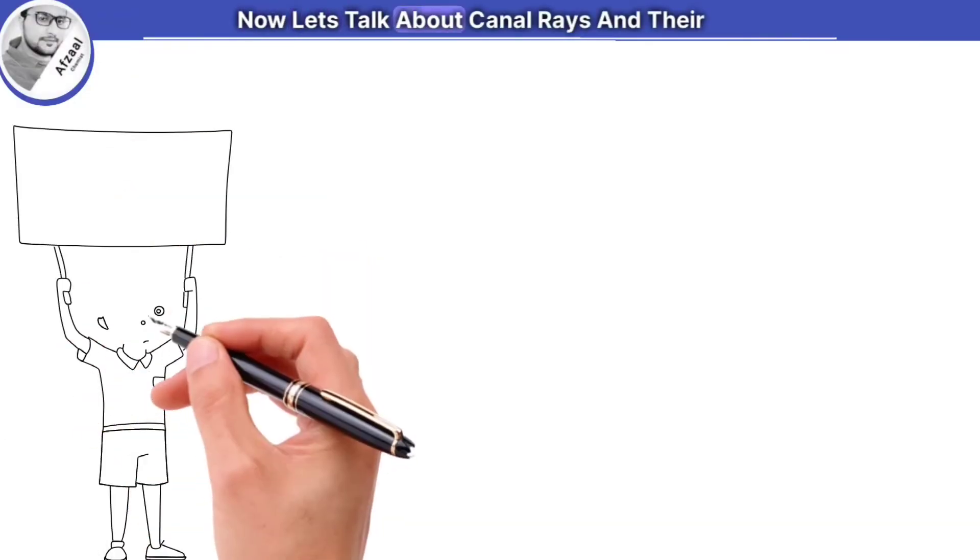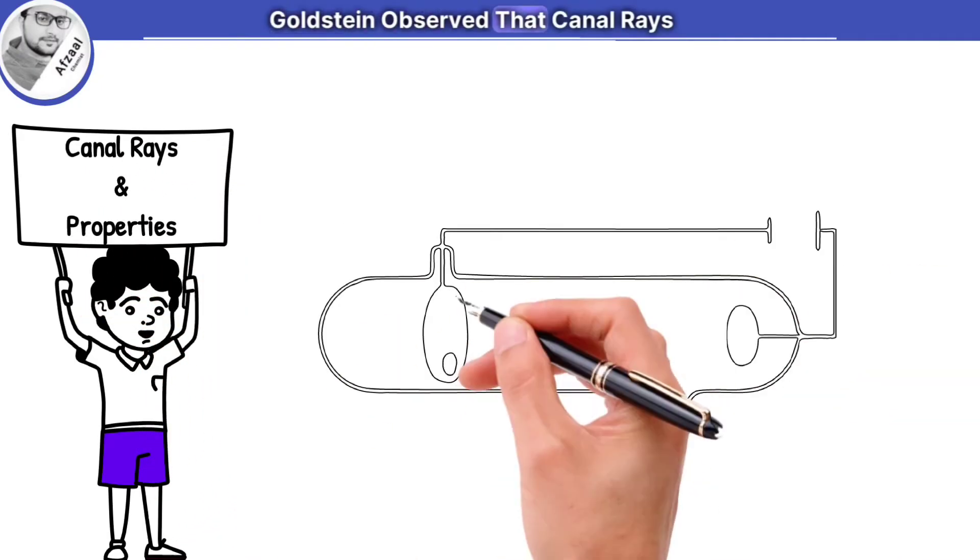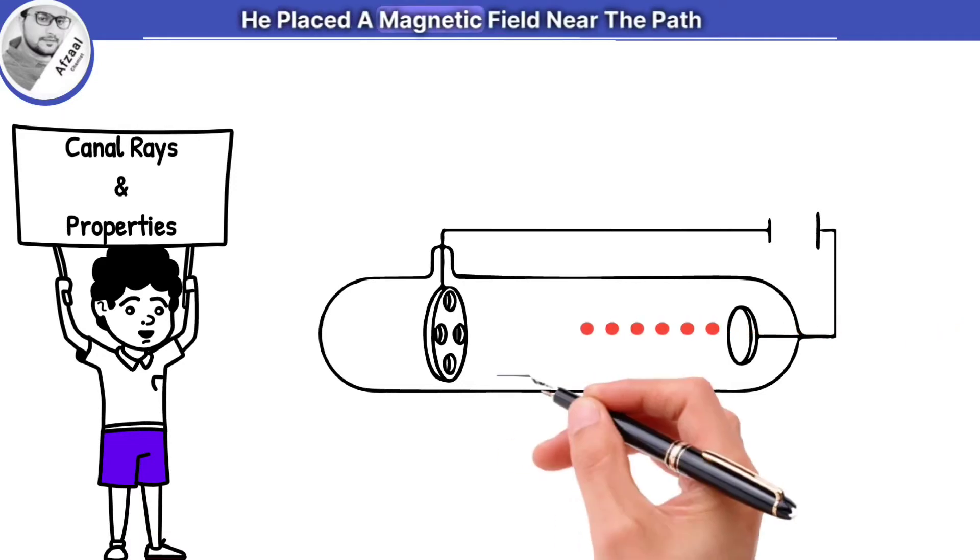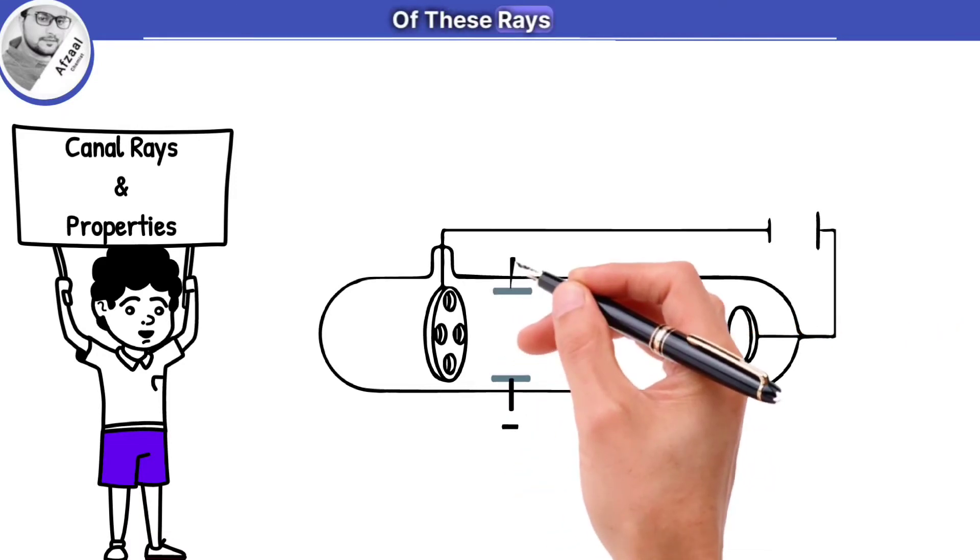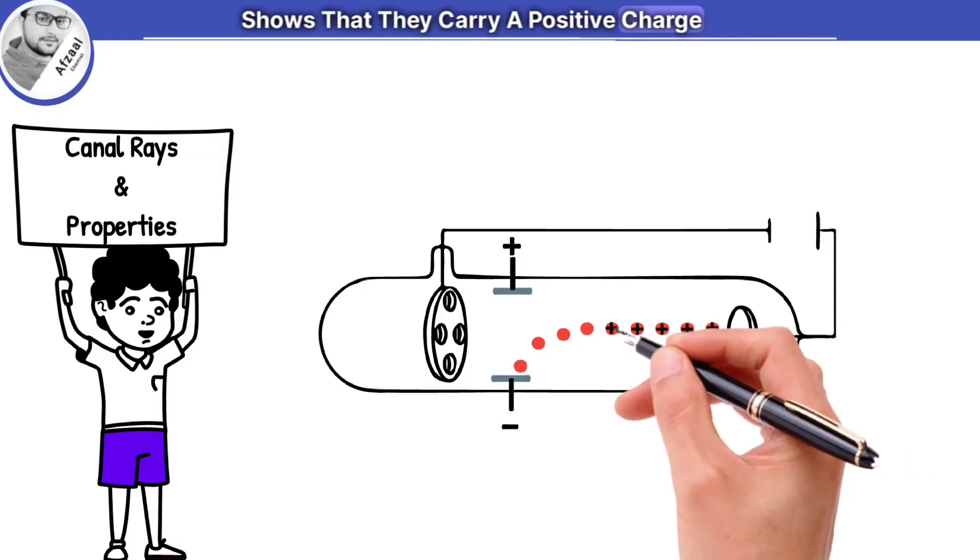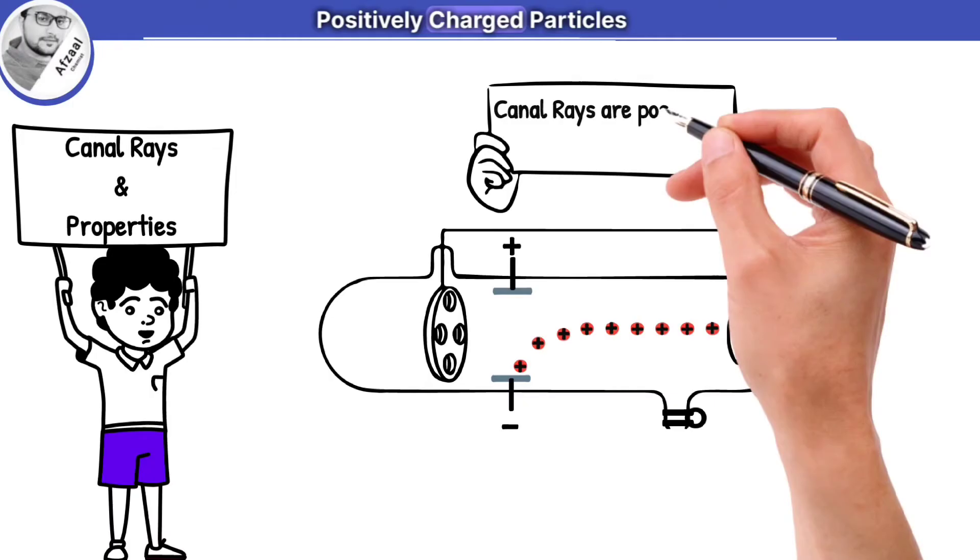Now, let's talk about canal rays and their properties. Goldstein observed that canal rays travel in a straight line. He placed a magnetic field near the path of these rays. It got deflected towards the negative plate. Their deflection towards negative plates shows that they carry a positive charge. So, he concluded that canal rays are positively charged particles.